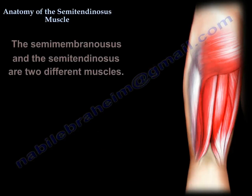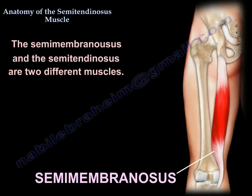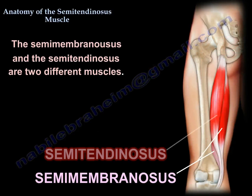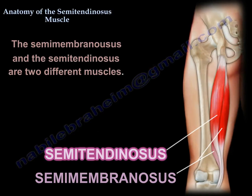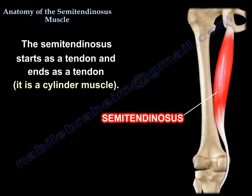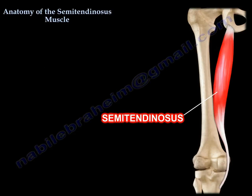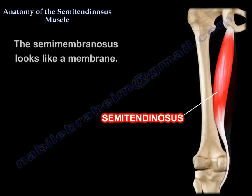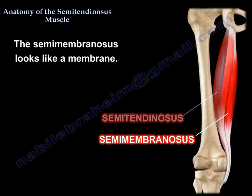The semimembranosus and the semitendinosus are two different muscles. The semitendinosus starts as a tendon and ends as a tendon — it is a cylinder muscle. The semimembranosus looks like a membrane.